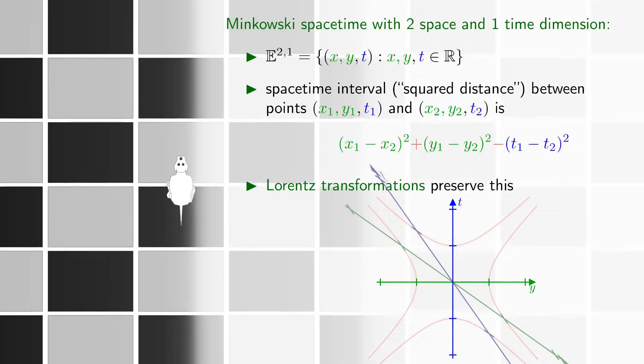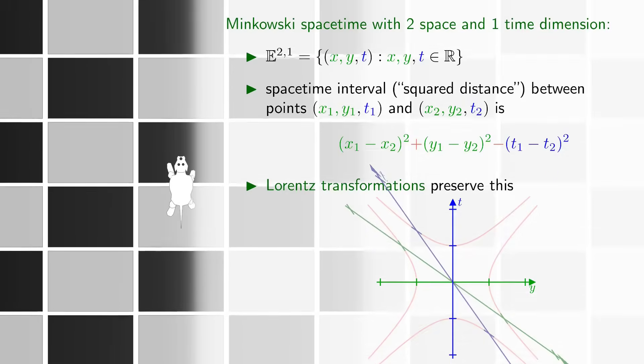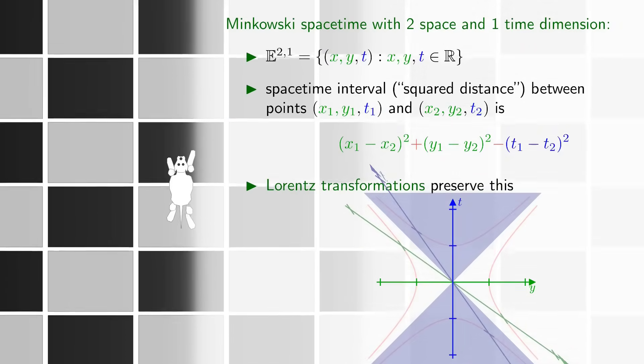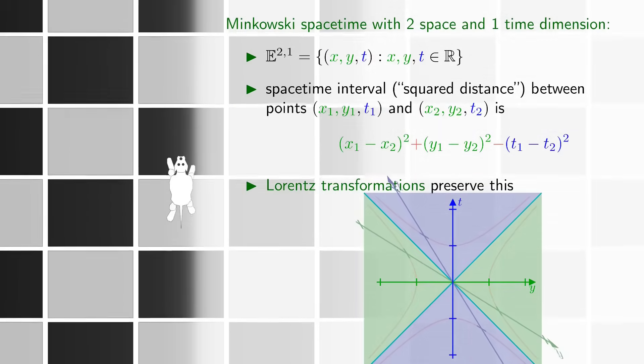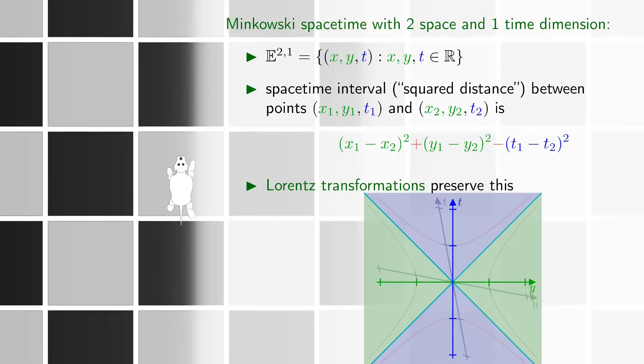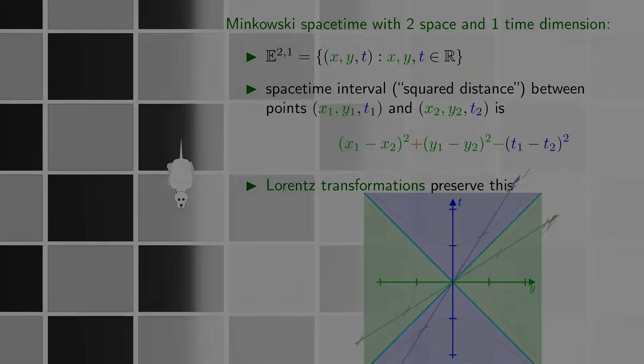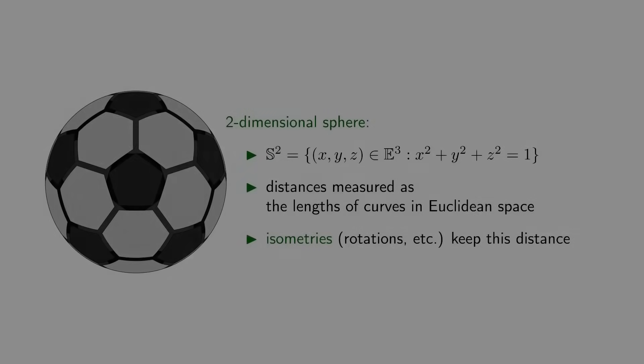Just like Euclidean geometry, Minkowski geometry is maximally symmetric. Spacetime directions can be classified as space-like, which means square distance greater than zero, light-like, which means square distance equal to zero, and time-like. In other words, square distance lower than zero. But if we have a point and a direction, we have an isometry that takes it into any other point and direction of the same type.